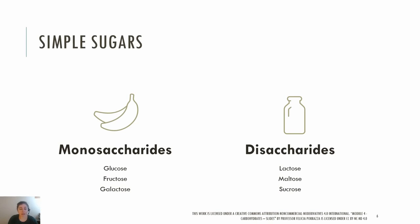Disaccharides, or double sugars, include lactose, maltose, and sucrose. Lactose is made up of glucose and galactose. Sucrose, which is made by crystallizing sugarcane or beet juice, is made up of glucose and fructose. Maltose is made up of glucose and glucose. It doesn't occur naturally in any appreciable amount in foods, with one exception: sprouted grains. When grains sprout, they break down starch and create maltose.